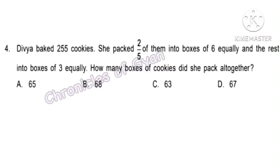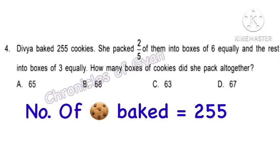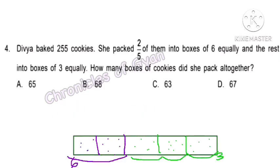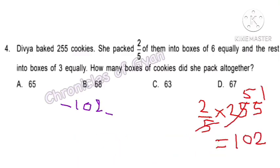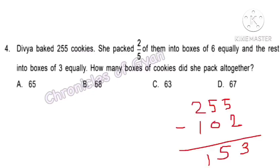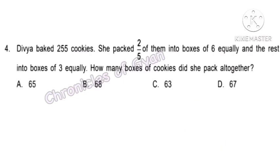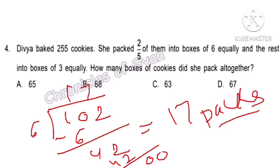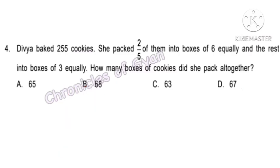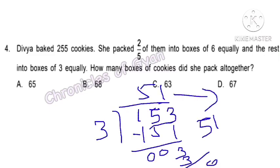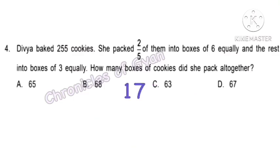Question 4. Divya baked 255 cookies. She packed 2/5 of them into boxes of 6 equally and the rest into boxes of 3 equally. How many boxes did she pack altogether? 2/5 of 255 is 102 cookies. The remaining 255 minus 102 equals 153 cookies. 102 divided by 6 gives 17 boxes, and 153 divided by 3 gives 51 boxes. Total: 51 plus 17 equals 68 boxes. Option B.